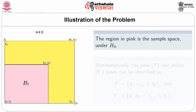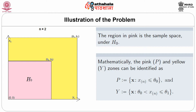For n=2 with X₁ and X₂, the region in pink is the sample space under H₀. Mathematically, the pink zone is where max(X₁, X₂, ..., Xₙ) — which we call X_(n) — is less than or equal to θ₀, and the yellow zone is where X_(n) lies between θ₀ and θ₁. The big square (pink union yellow) is the sample space under θ = θ₁.